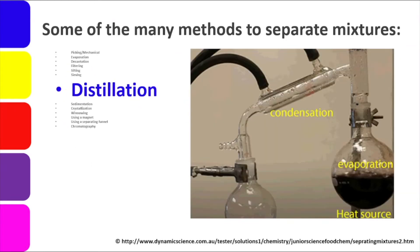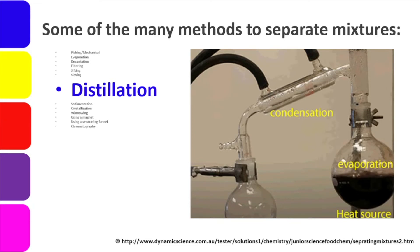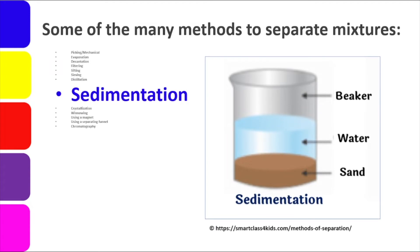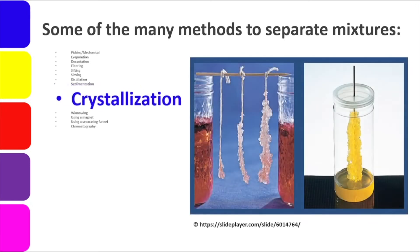Distillation is a process of separating miscible liquid-to-liquid mixtures — meaning they are truly mixed together. The process involves two steps: evaporation, where the mixture is heated and the first component becomes steam and rises, then condensation, where it is cooled back into liquid form and transferred to another container. Sedimentation is simply letting solid residues settle in a liquid mixture — just leave it and the heavier parts sink. Crystallization is similar to sedimentation but you use something for the solid residue to crystallize onto.